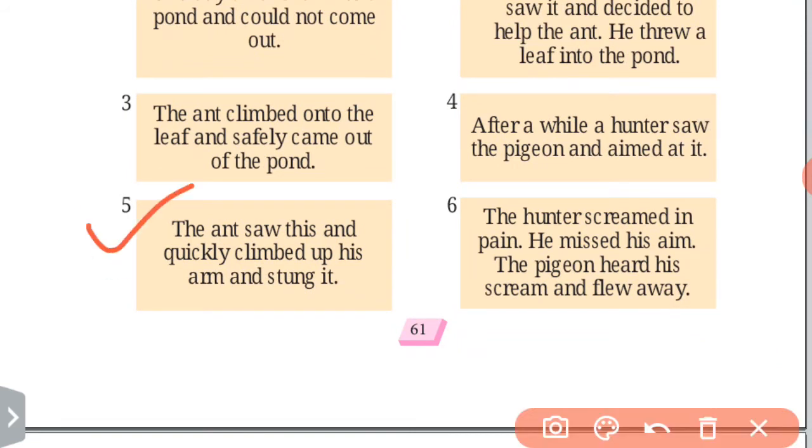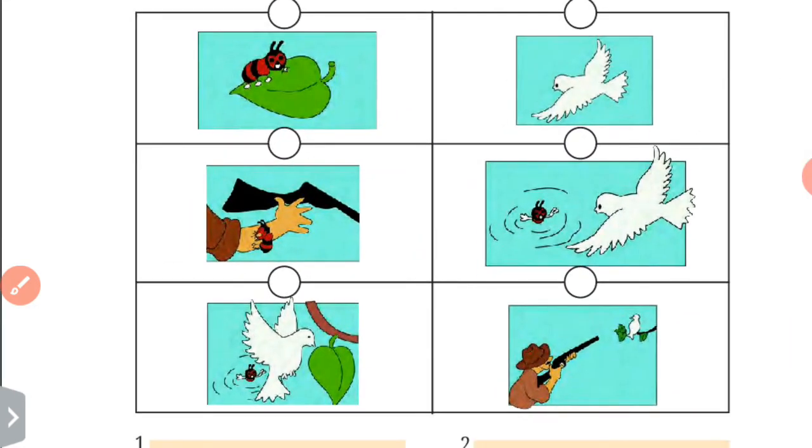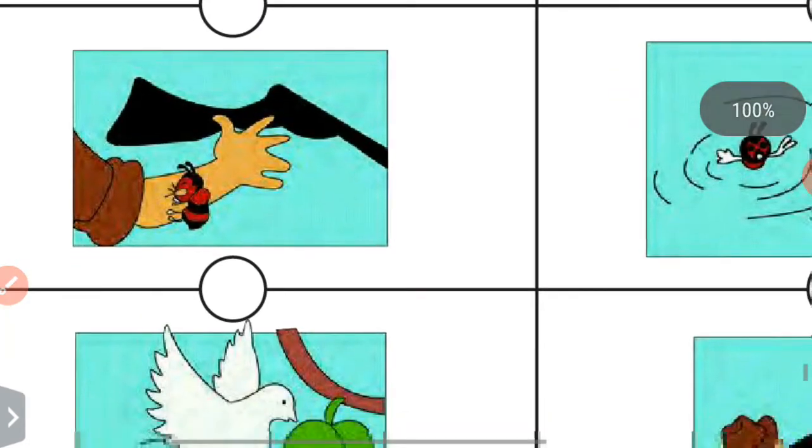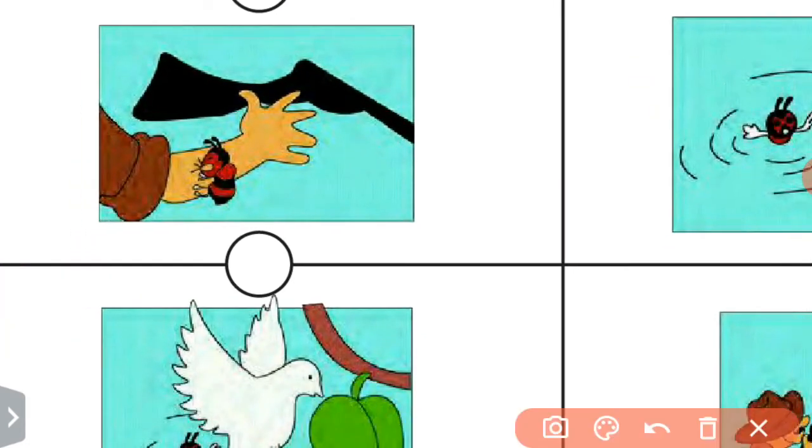Now fifth number is, the ant saw this and quickly climbed up his arm and stung it. So the ant sees it and wants to help the pigeon because the pigeon helped the ant.